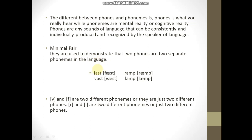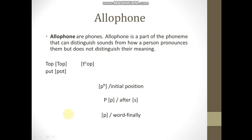For example, the words 'fast' and 'vast', and the words 'ram' and 'lamb'. V and F are two different phonemes. Similarly, R and L in 'ram' and 'lamb' are two different phonemes.